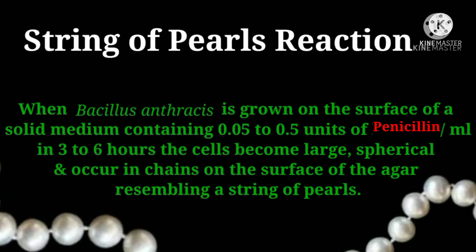When Bacillus anthracis is grown on the surface of a solid medium containing 0.05 to 0.5 units of penicillin per ml, in three to six hours the cells become large and spherical, occurring in chains resembling a string of pearls.